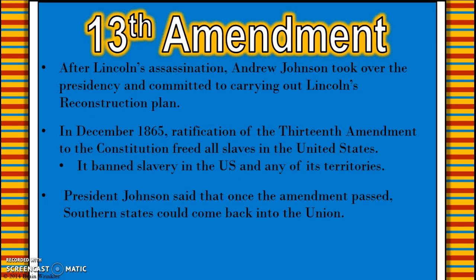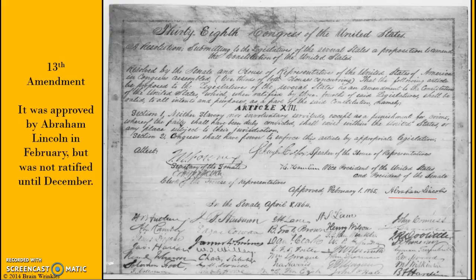Lincoln was assassinated, so his plan did not go into action. Vice President Andrew Johnson took over the presidency and was committed to carrying out Lincoln's plan but added a few things. In December of 1865, the ratification of the 13th Amendment freed all the slaves in the United States and banned slavery in the US and any of its territories. Johnson said that once the amendment was passed, the southern states could come back into the Union. The 13th Amendment was approved by Lincoln but not ratified until December, after he had already been assassinated.